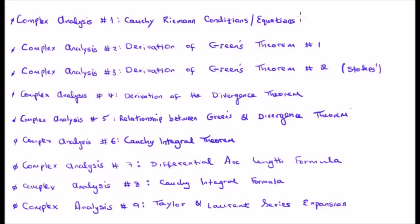In video 1 I discussed the Cauchy-Riemann equations. In videos 2 and 3 I derived Green's theorem. In video 4 I derived the divergence theorem. In video 5 I showed the relationship between Green's theorem and the divergence theorem. In video 6 I discussed the Cauchy-Integral theorem. In video 7 the differential arc length formula. And in video 8 we derived the Cauchy-Integral formula. Most recently in video 9 I showed how using the Cauchy-Integral formula we could derive both the Taylor and Laurent series expansions.